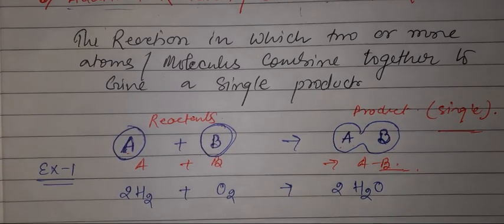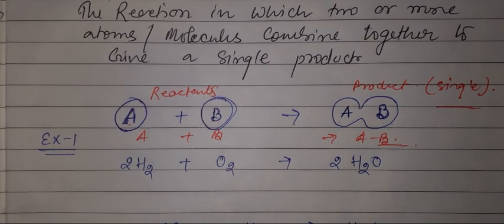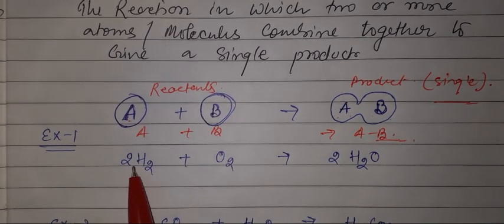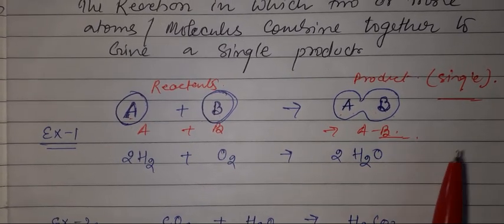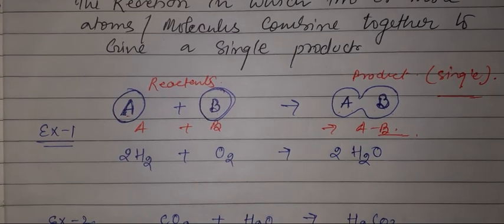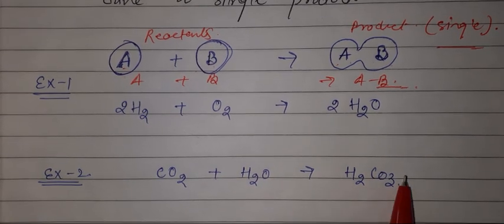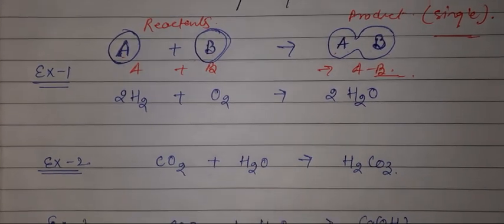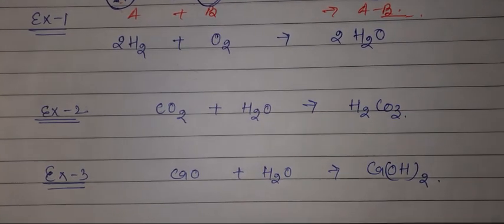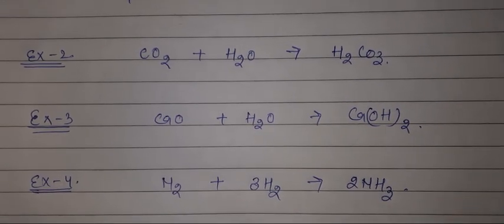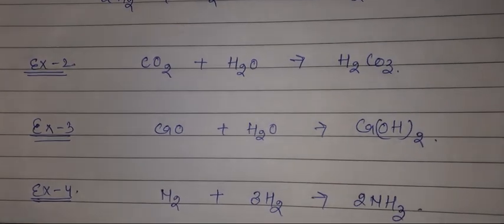We have different types of combination reaction like 2H2 plus O2 gives 2H2O. Next is CO2 plus water gives H2CO3. The next one is CaO plus H2O gives Ca(OH)2. And the last one is N2 plus 3H2 gives 2NH3.